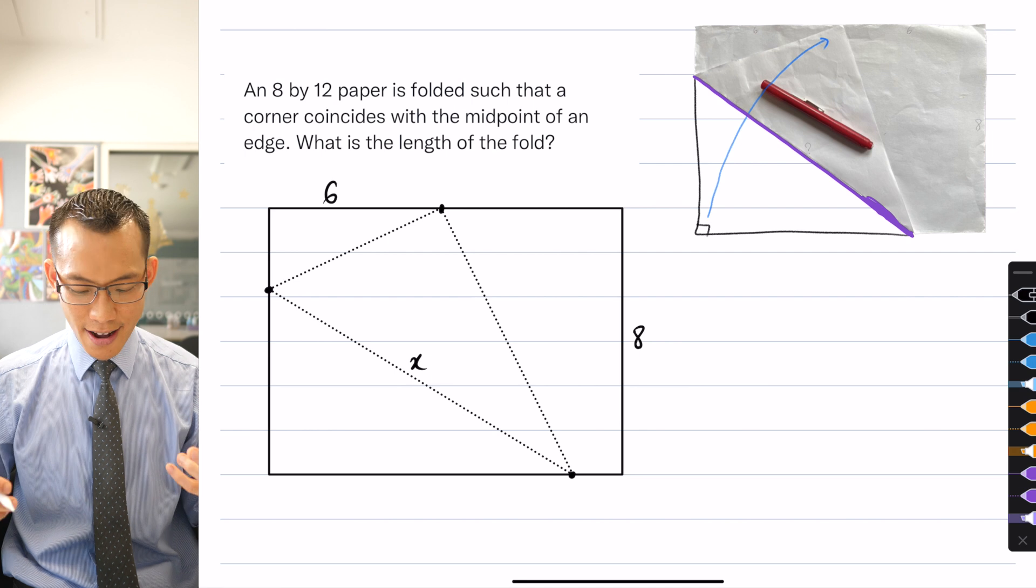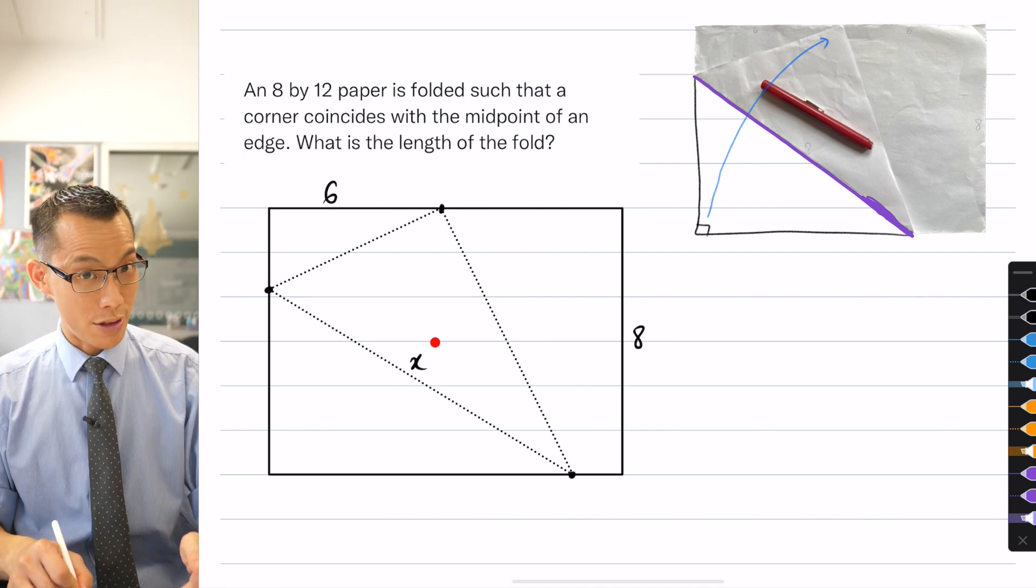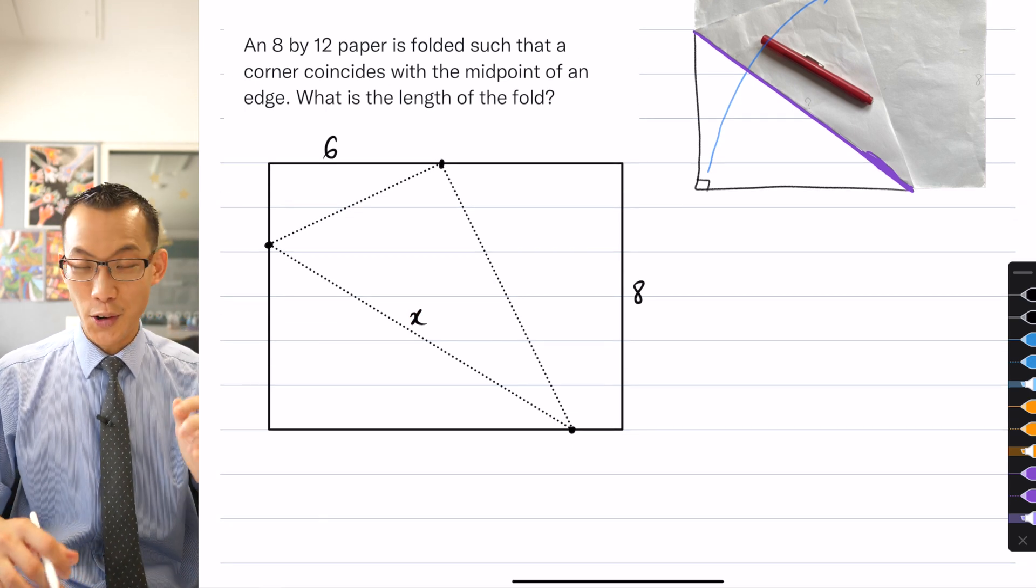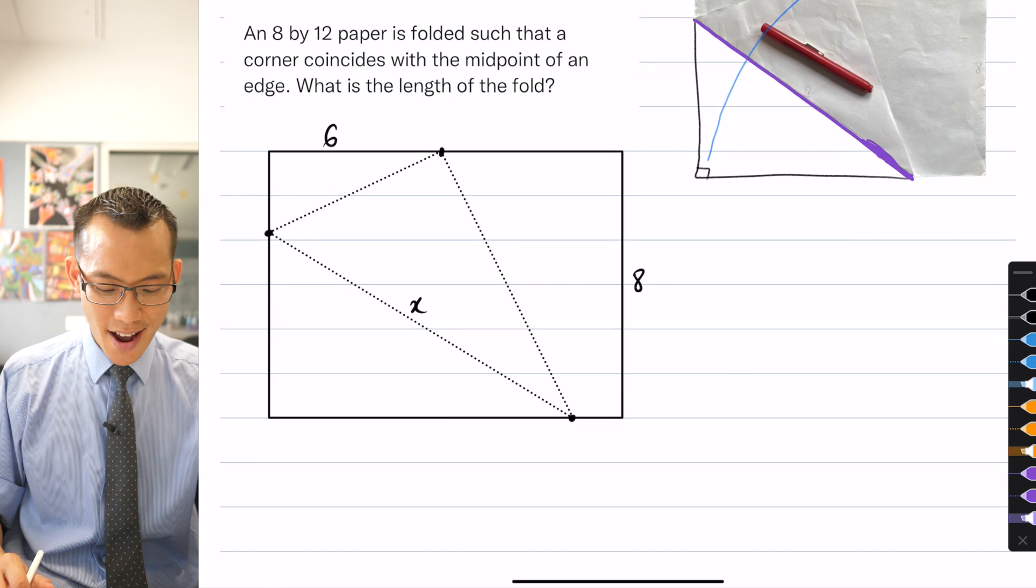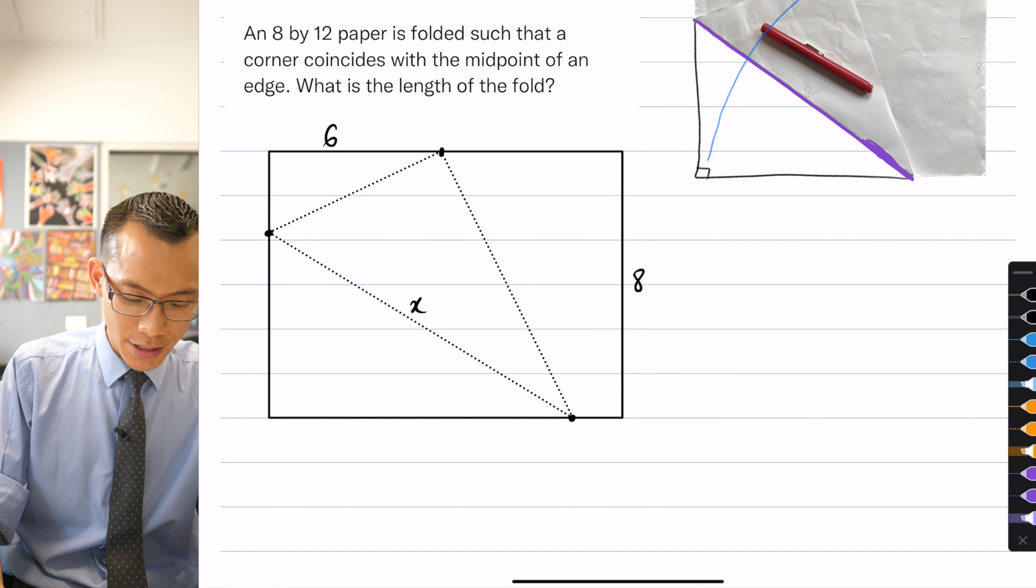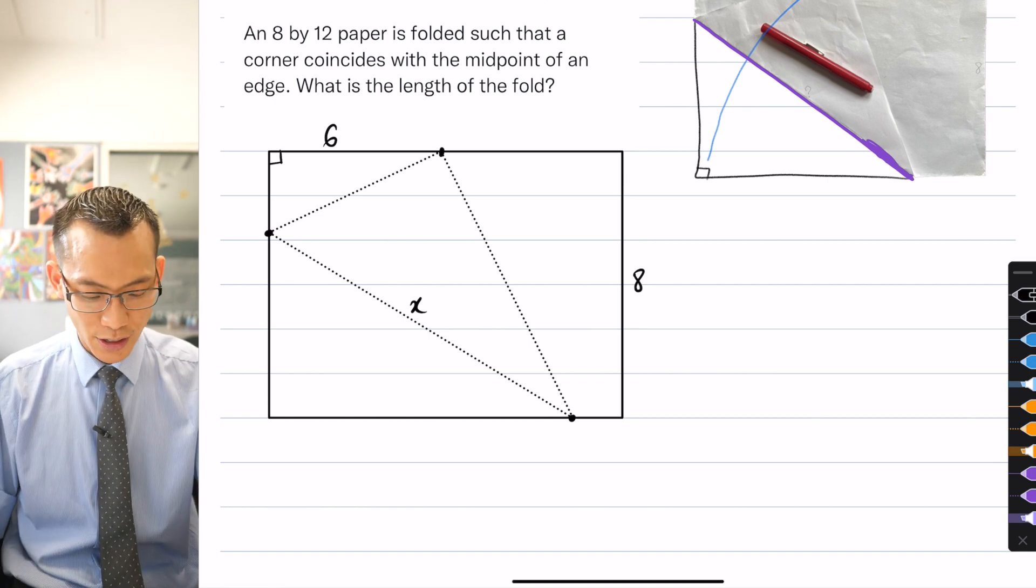Now, what I want to do then is say, how can I get this 6 and this 8 and relate them to the x? Well, for starters, because I've sort of gotten in the rhythm of things already, I know that there are going to be some right angle triangles here and some of them are very easy to spot. So for example, I've obviously got a right angle triangle happening up in this top left-hand corner.